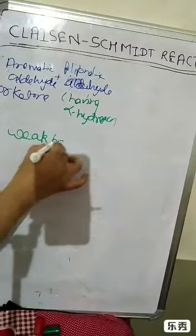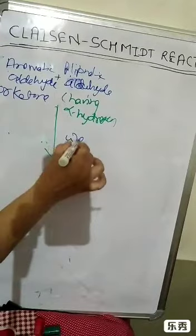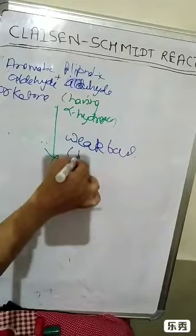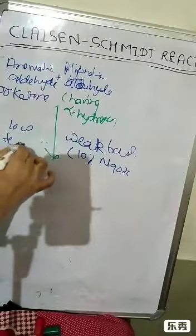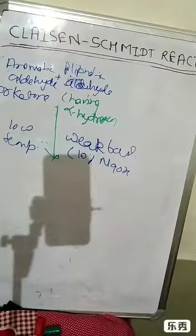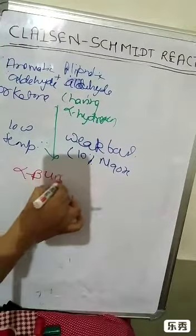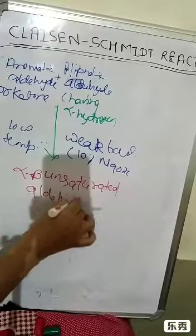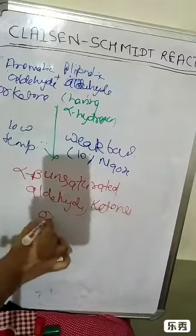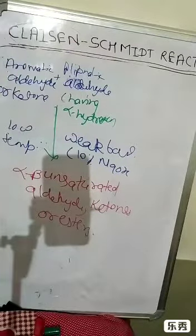The weak base used is 10% NaOH at low temperature. A cross aldol condensation with subsequent dehydration occurs, with the formation of an alpha,beta-unsaturated aldehyde, ketone, or ester.